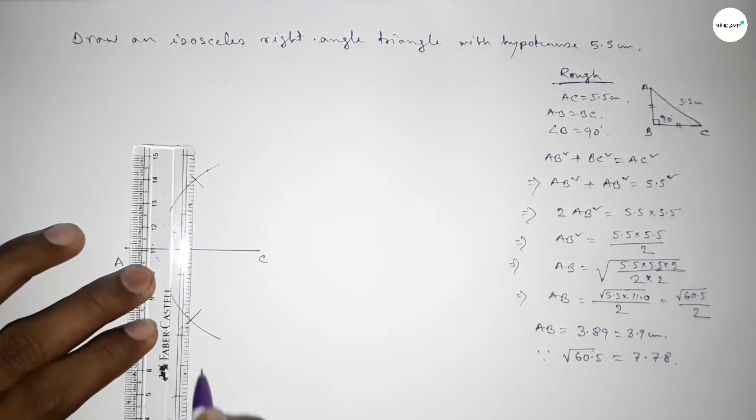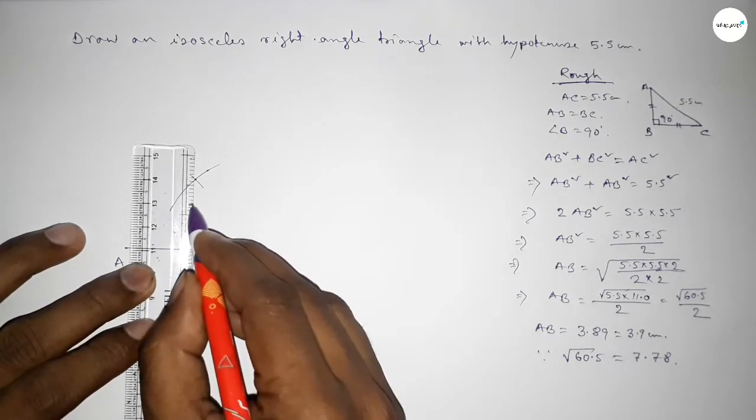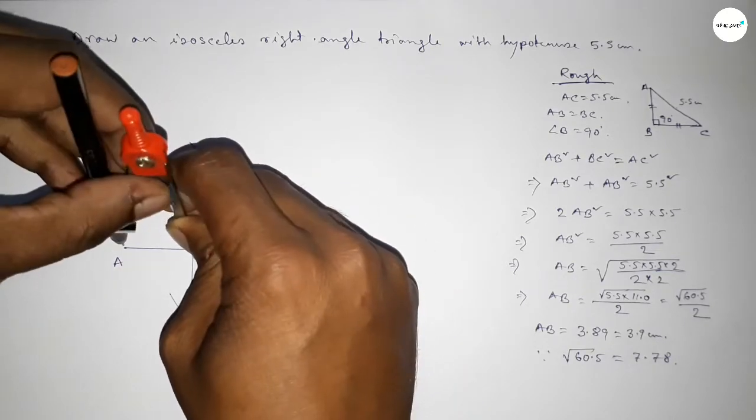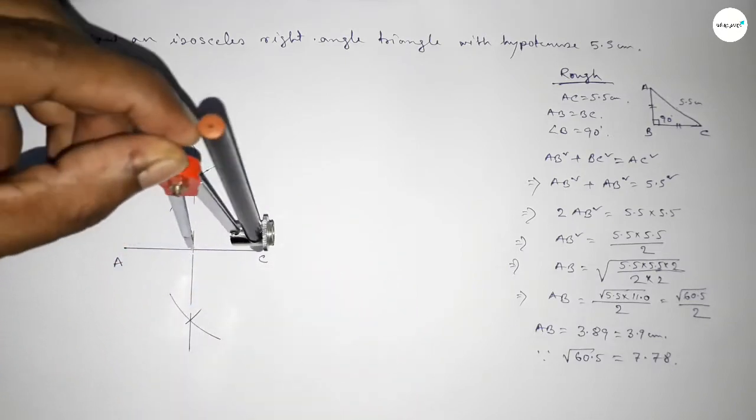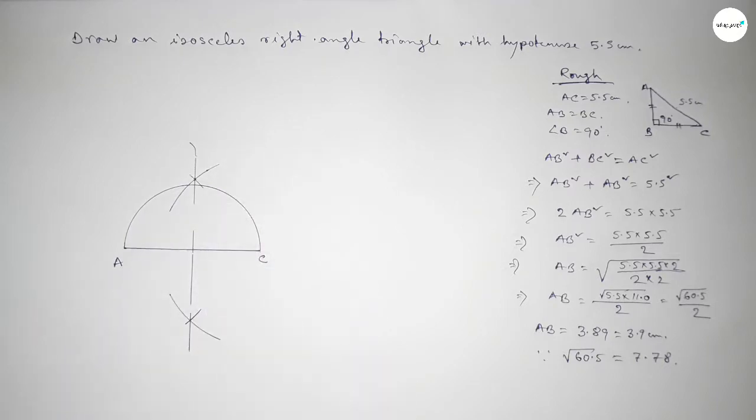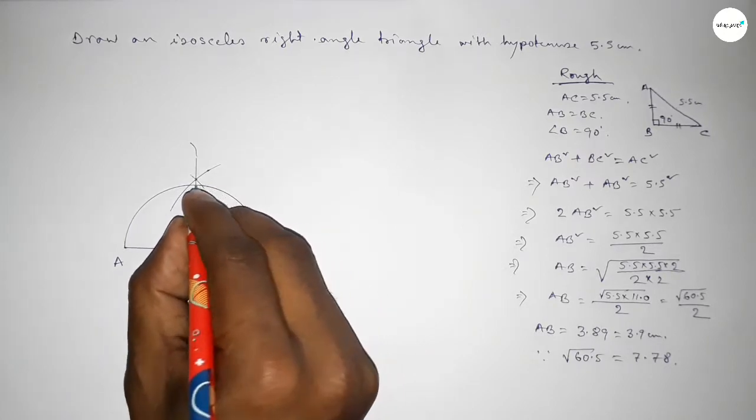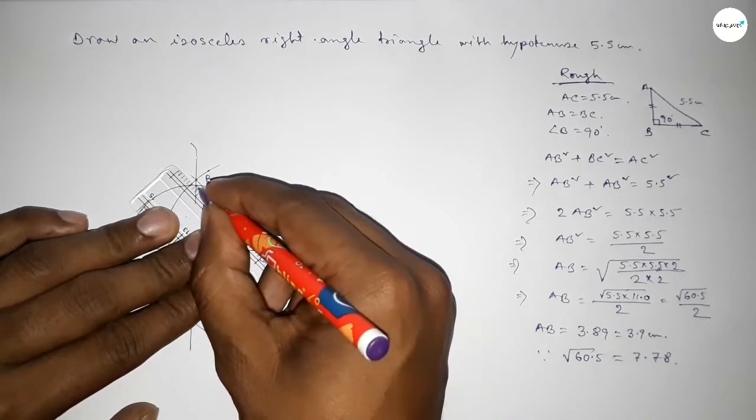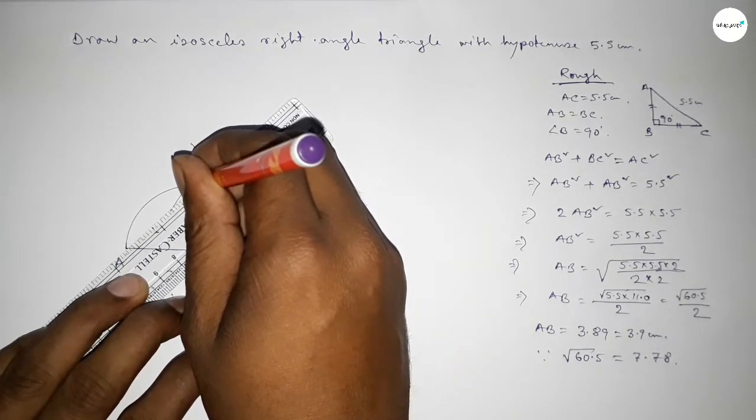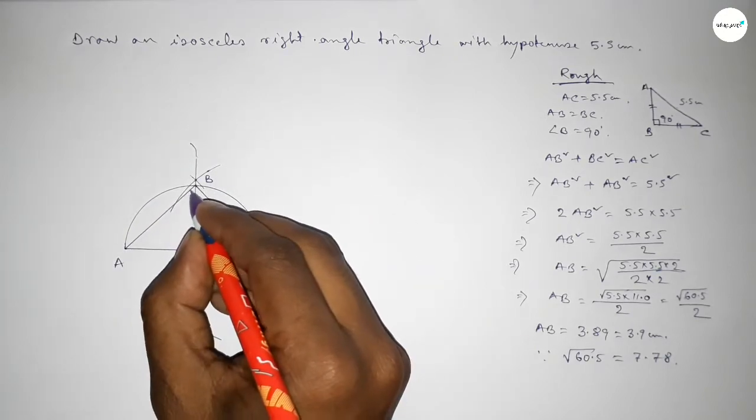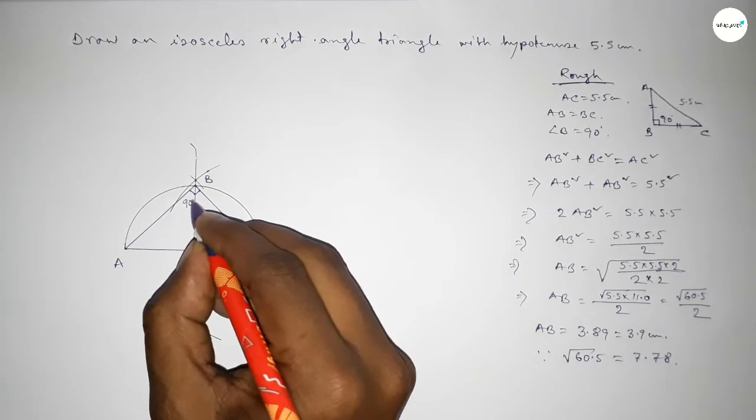Now join this bisector. Next, put the compass at the midpoint and take distance OA to draw a semicircle. The semicircle and the bisector meet at point B. Now join B and C, then join A and B. The angle in a semicircle is always 90 degrees.